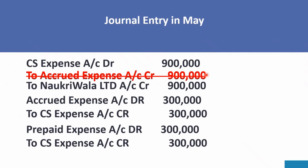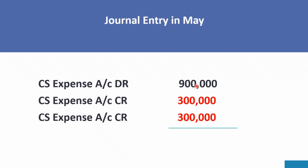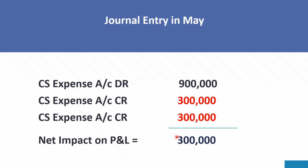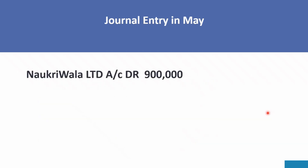The net impact of these three entries in May shows only three lakh rupees on the P&L — the correct amount for May. Of the total nine lakh rupees invoice, three lakh was reversed as the previous accrual and three lakh was deferred as prepaid expense. The fourth and final entry in May is payment of the invoice: Naukriwala Limited Account debit nine lakh rupees, to Bank Account nine lakh rupees.